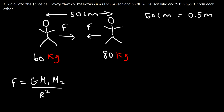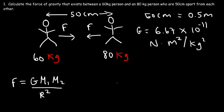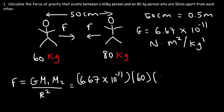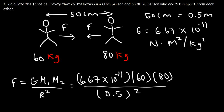G is the universal gravitation constant — it's 6.67 times 10 to the minus 11, and the units are newtons times square meters divided by square kilograms. So let's go ahead and calculate the gravitational force. It's going to be 6.67 times 10 to the minus 11 times 60 kilograms times 80 kilograms divided by 0.5 meters squared. The answer is very small — it's 1.28 times 10 to the minus 6 newtons. So that's the force of gravity between these two individuals.